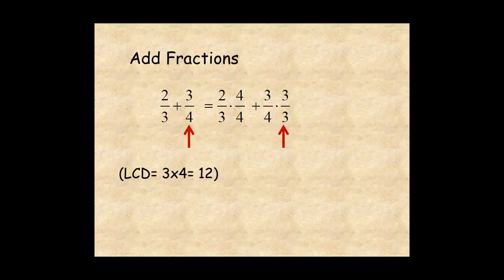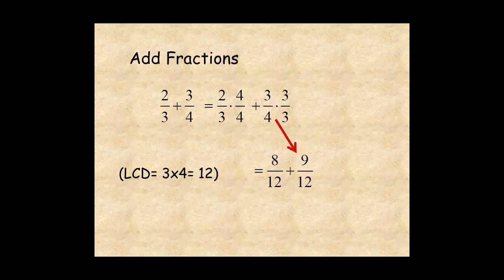Then 2 over 3 times 4 over 4 is 8 over 12. And 3 over 4 times 3 over 3 is 9 over 12. Finally, add the numerators for 17 over 12.